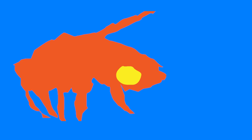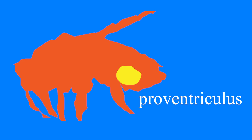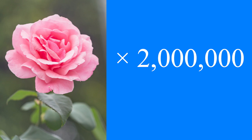Bees store their nectar in an extra stomach called the honey stomach, or the proventriculus. This is a pre-digestive part which honeybees use to bring water and nectar to their hive. Honeybees gather nectar from 2 million flowers to make just a pound of honey, or 453.5 grams. For that, a bee flies around 90,000 miles — 144,840 kilometers — or three times around the globe.